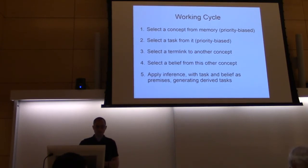Now we come to the control part. What is the working cycle of the system? This one is very simple. It's always this cycle we see here, which is used for all the cognitive functions in the system. Basically, at first we select a concept from memory, biased by the priority it has, so concepts which have a higher priority tend to be selected. Concepts with low priority have little chance for selection, but not zero.